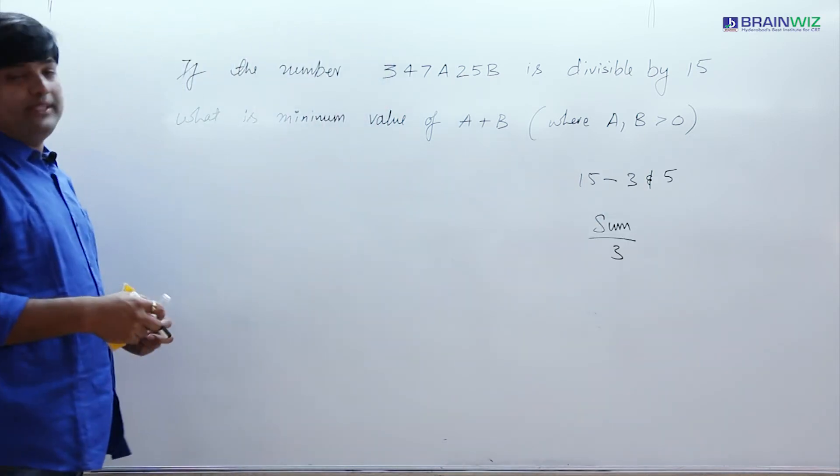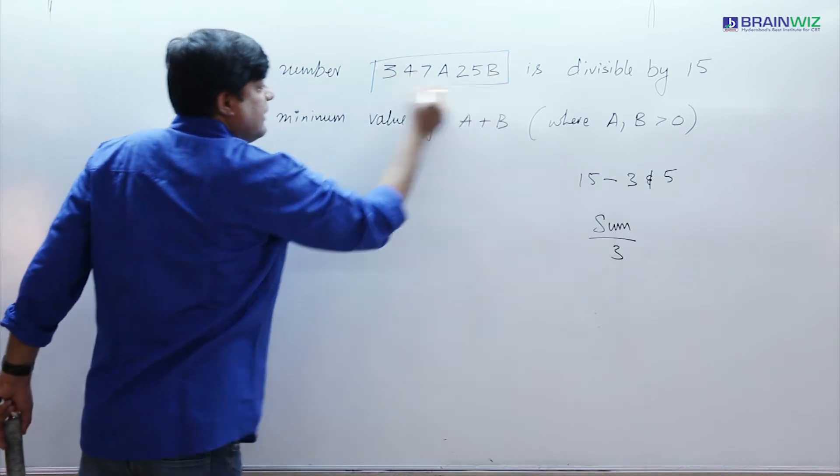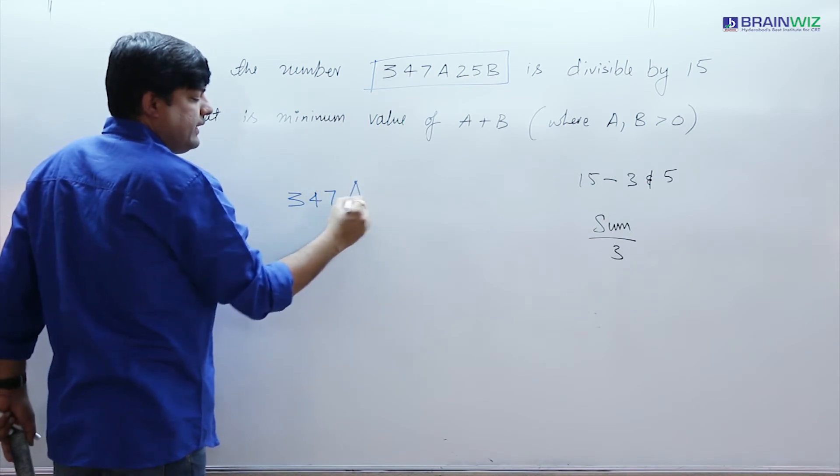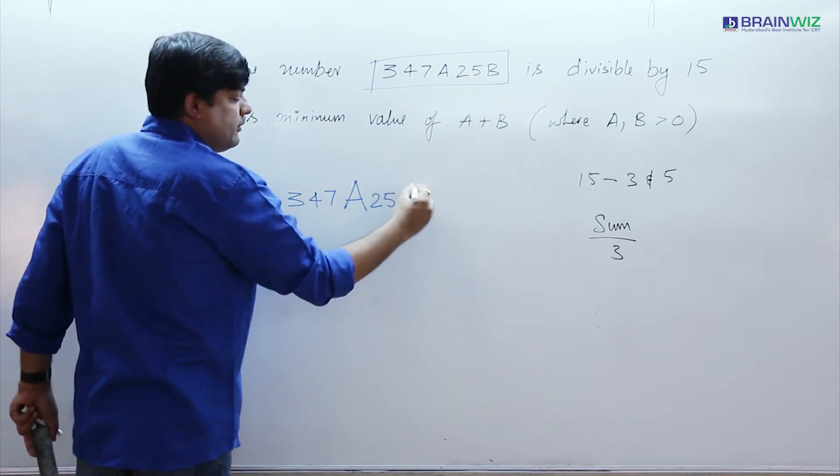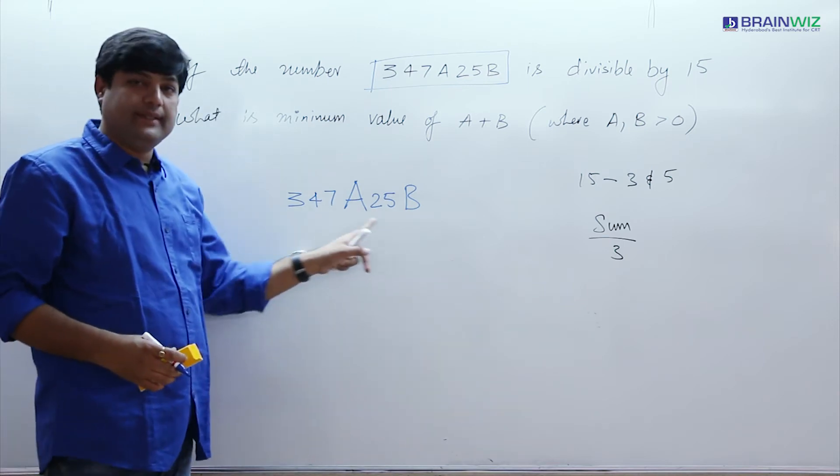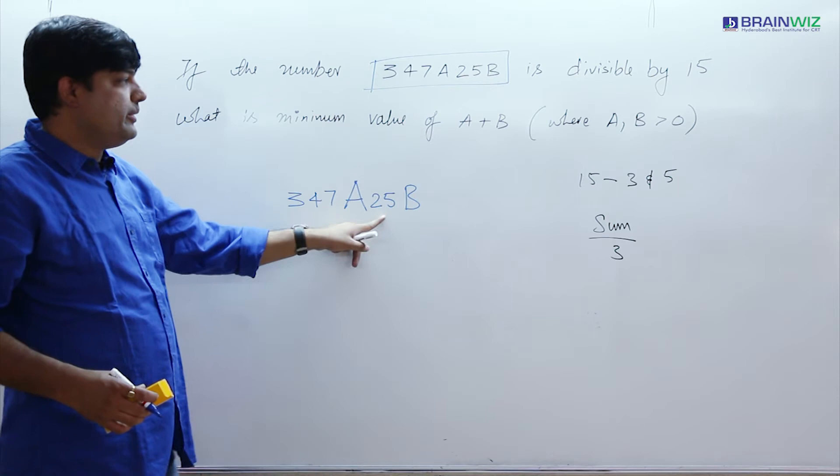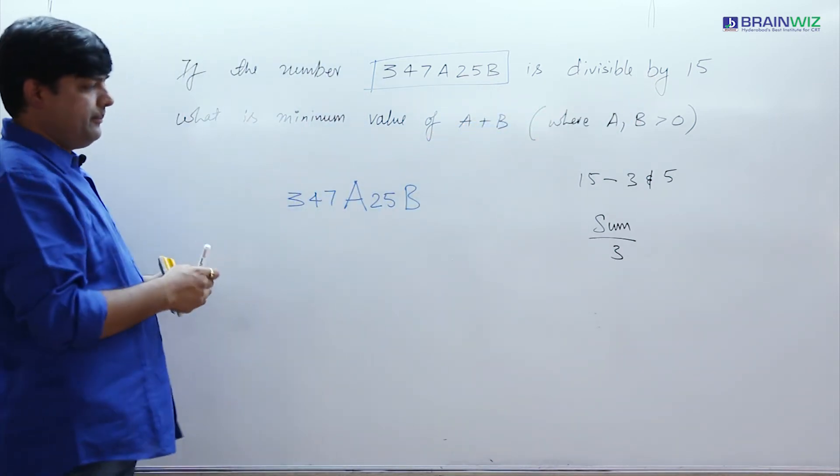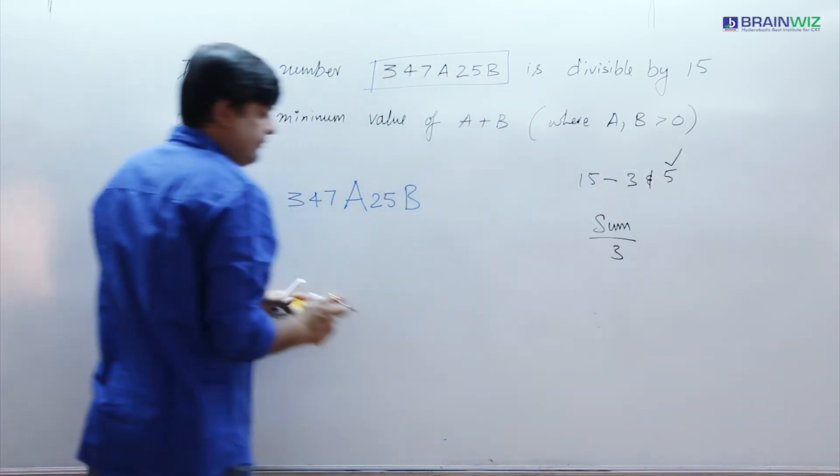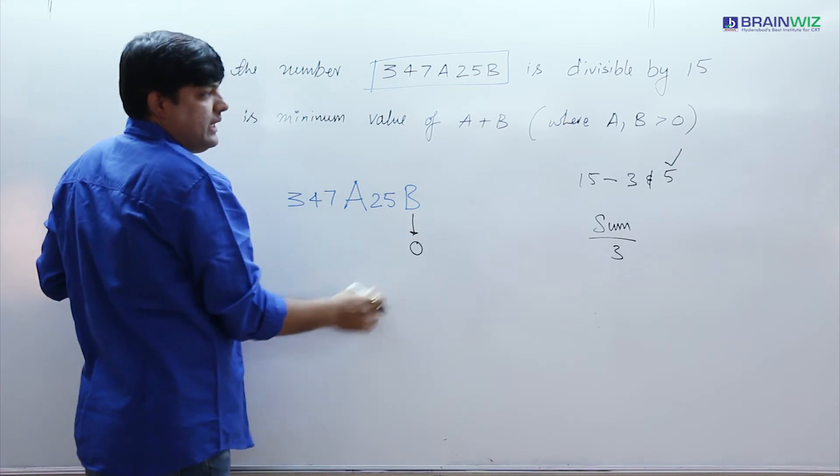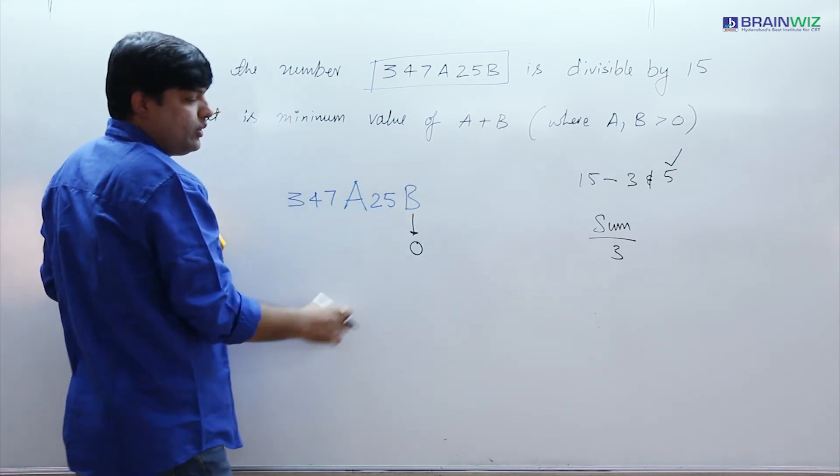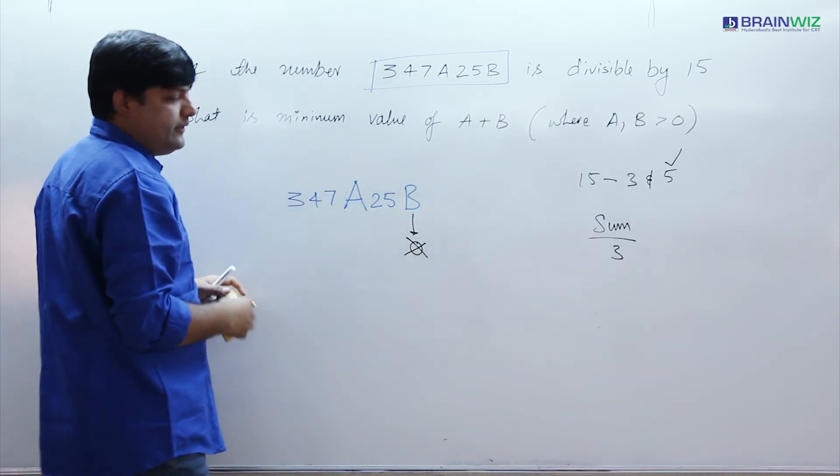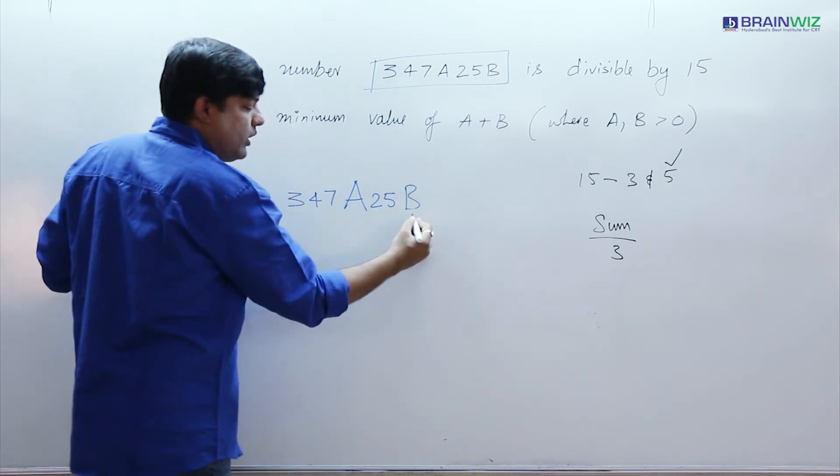Now let me see what is the number given. Here the number is given like this: 3, 4, 7, A, 2, 5, B. We have to find out these two missing terms so that the number should be divisible by 15. Now here as the number should be divisible by 5, this value B has to be 0. As 0 is not taken because A and B values are more than 0, so 0 is not accepted. If 0 is not accepted, the another value of B can be 5.